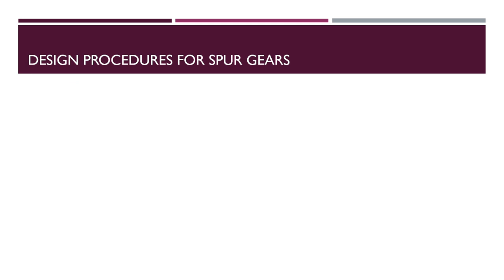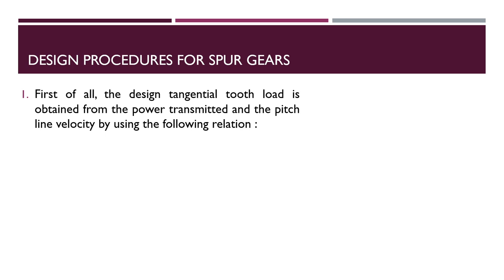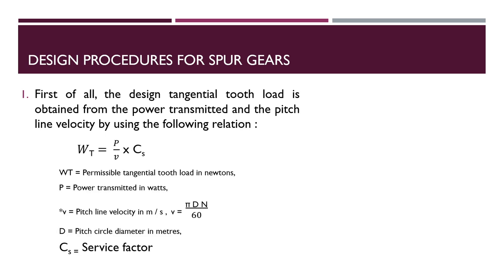The first design procedure for a spur gear is the calculation of Wt, that is the tangential tooth load. The basic equation for calculating the tangential tooth load from the power and velocity transmitted is: Wt = P / (V × Cs), where P is the power transmitted in watts, V is the pitch line velocity in meters per second, and Cs is the service factor. The pitch line velocity V can be calculated using V = πDN/60, where D is the pitch circle diameter.